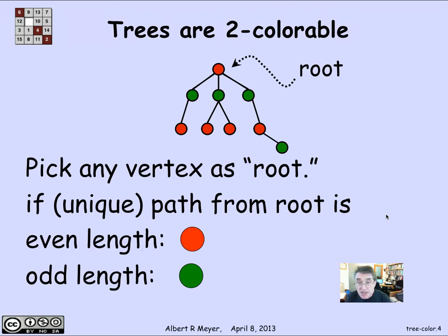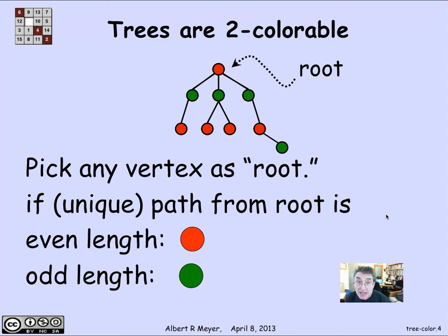Another characterization of two-colorability in general is that a graph is two-colorable providing that all the cycles it has, if any, are of even length. Of course, a tree has no cycles, so that makes it two-colorable for sure.